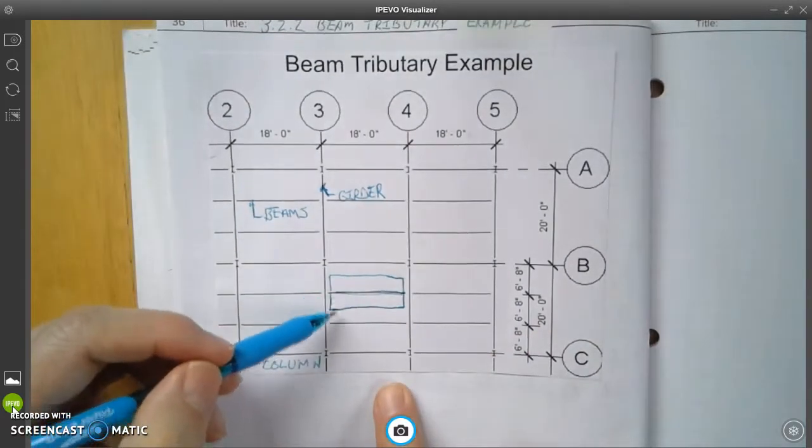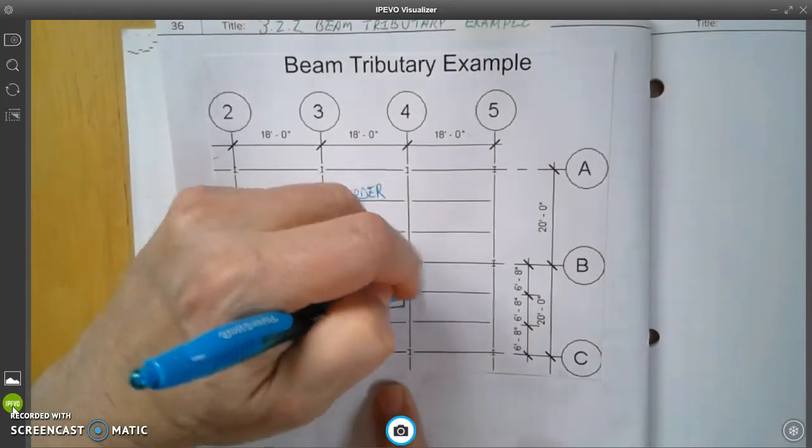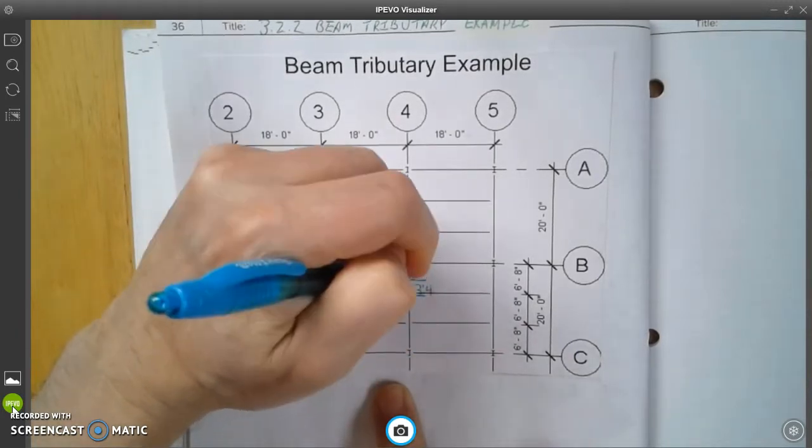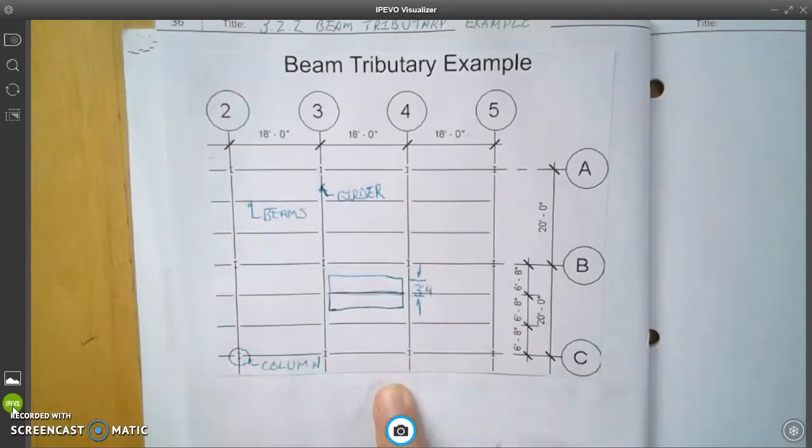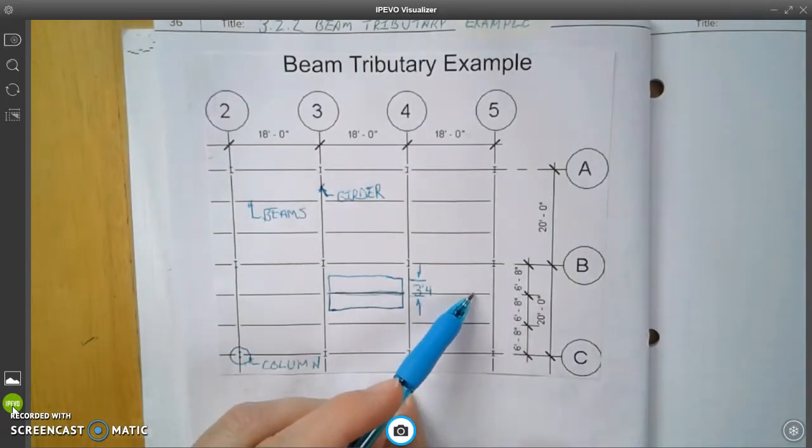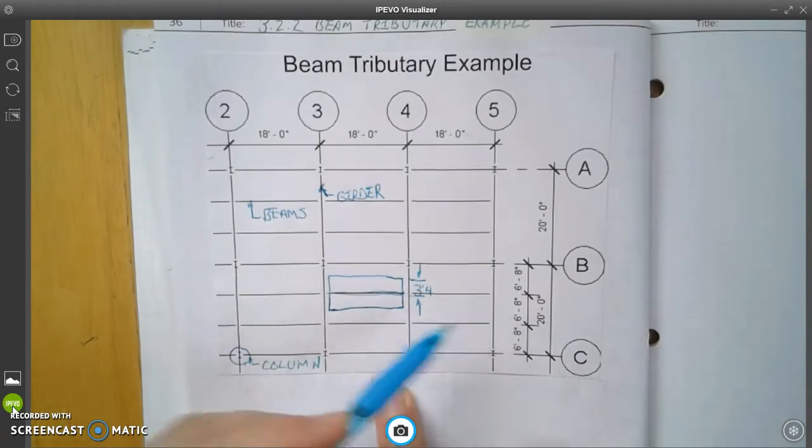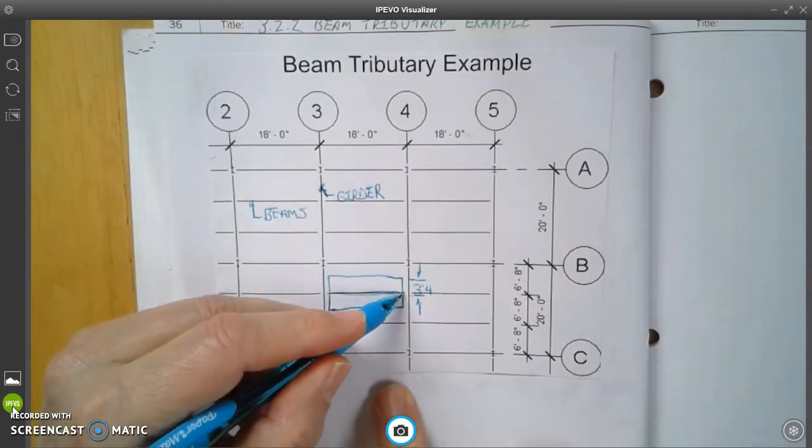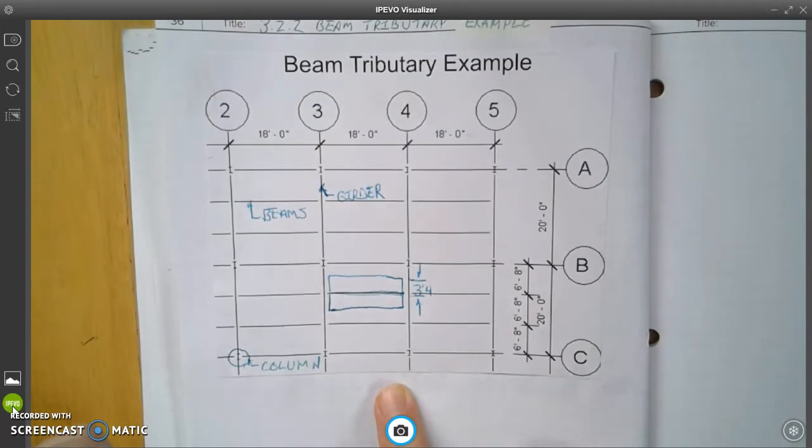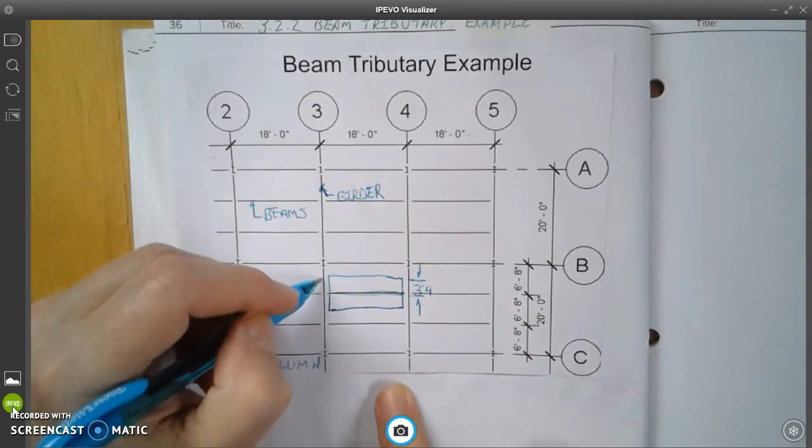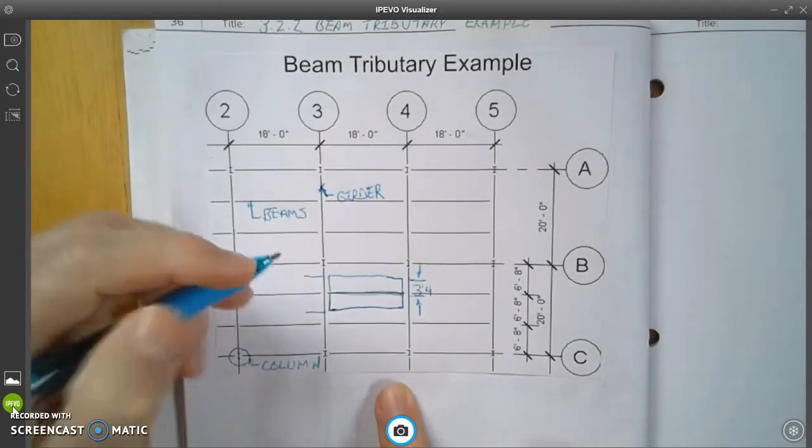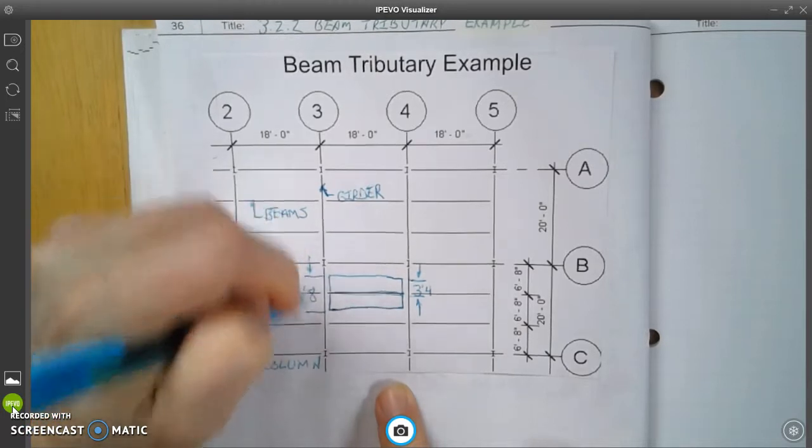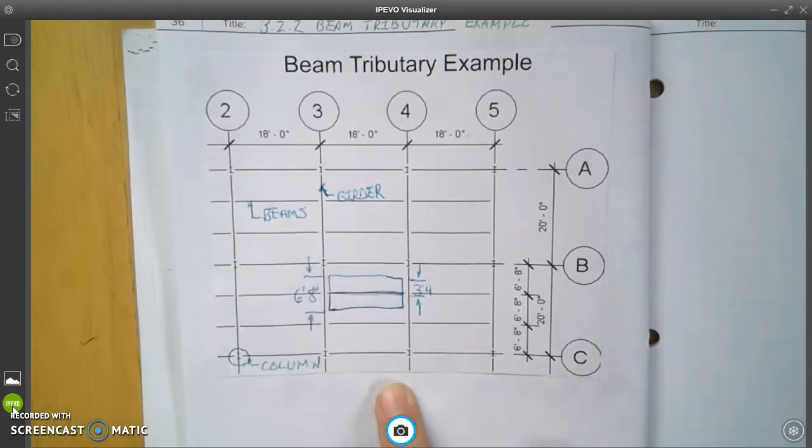This is what's called the tributary area. Now the distance from here to here is 3 feet 4 inches. And that's because our width from beam to beam is 6 feet 8. So half of this would be 3 feet 4. It's also 3 feet 4 from the beam to halfway down in this span. So 3 feet 4 and 3 feet 4 gives us a 6 foot 8 inch tributary area.